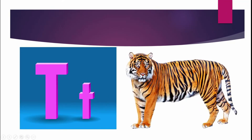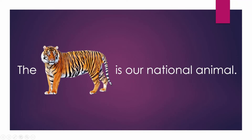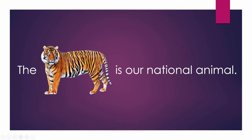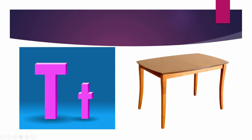Next one: T for tiger. You have already learned about this animal in GK class. Is it a wild animal or a domestic animal? Yes, it's a wild animal. Let's see one sentence: the tiger is a wild animal. The tiger is also the national animal.